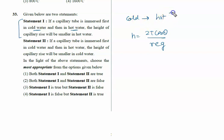So when going cold to hot, surface tension decreases, or you can say T decreases. So when surface tension decreases, height also decreases.